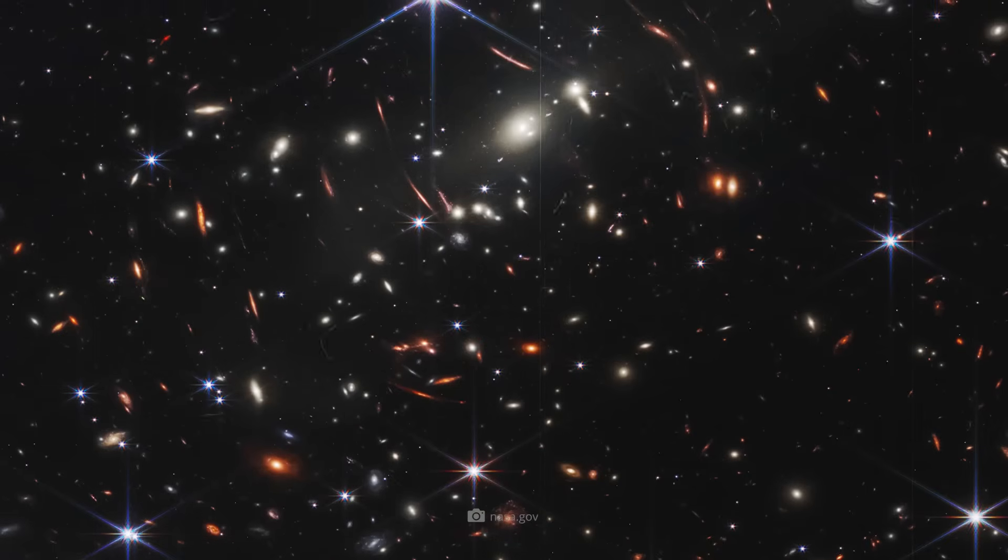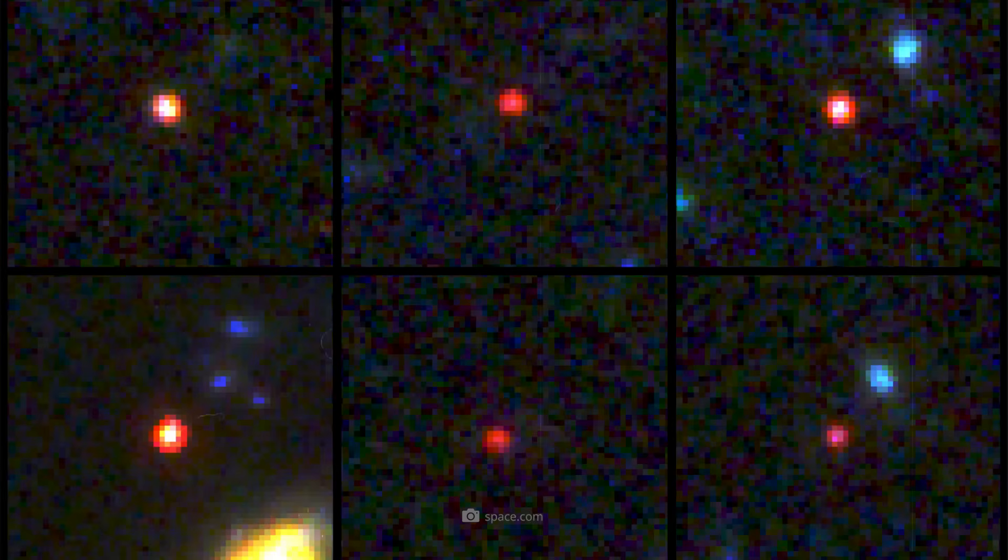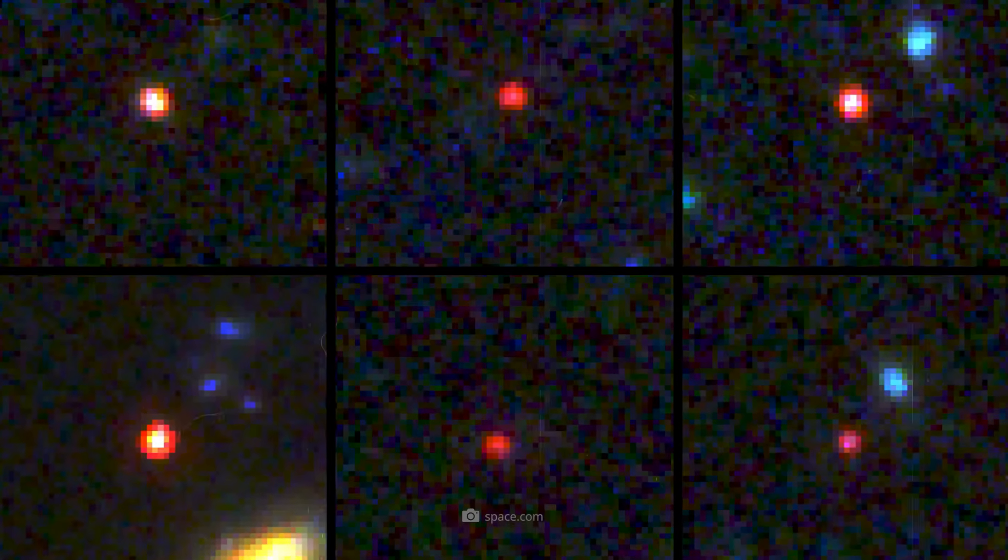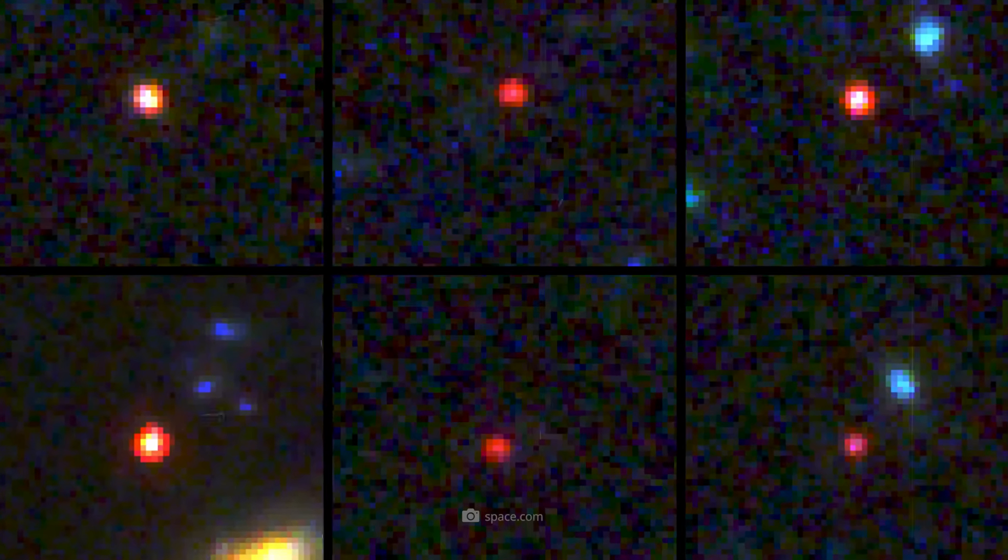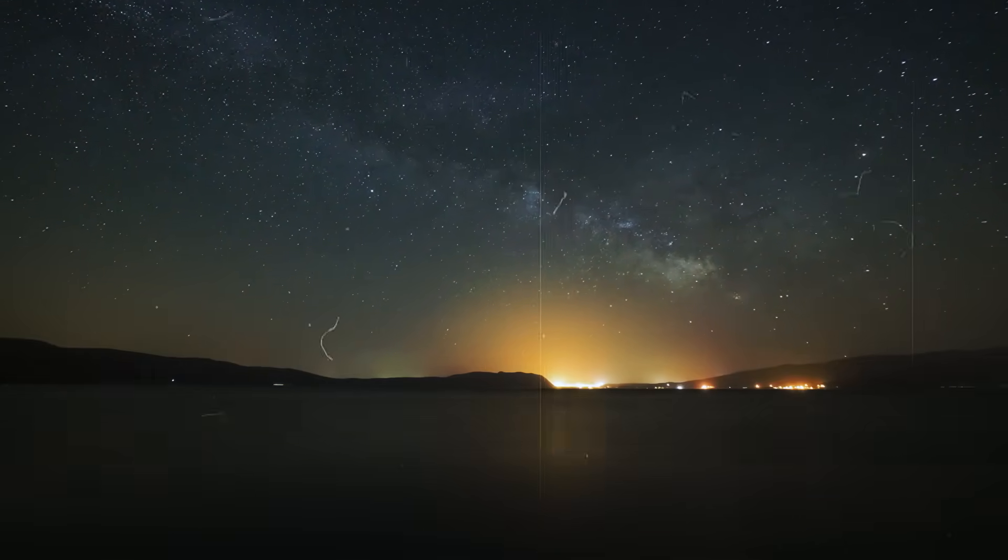But does this mean that the mystery of the little red dots has finally been solved? Well, not quite yet. Because apparently, the objects disappeared from the cosmic scene again after about 1.5 billion years. And so far, we don't know what the reasons for this sudden disappearance are.